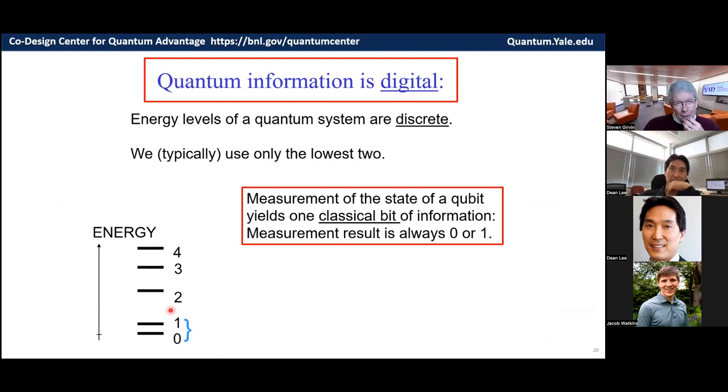Now, quantum information is quantized or digital or discrete because we've seen that if you measure the energy level, what energy does the atom have, you'll either get level zero or level one. And so measurement of the state of a qubit yields one classical bit of information, a zero or a one, just as if I opened up a computer and measured the value of a bit stored in memory, I would always get either zero or one, never anything in between or both, you would get zero or one.